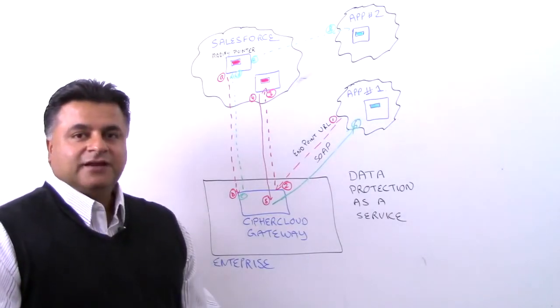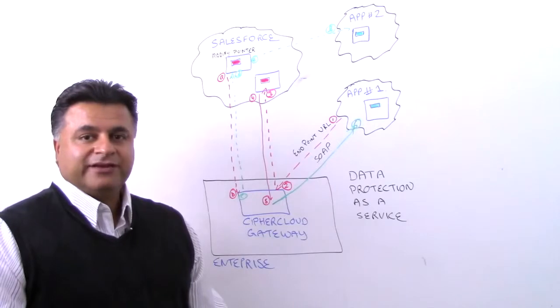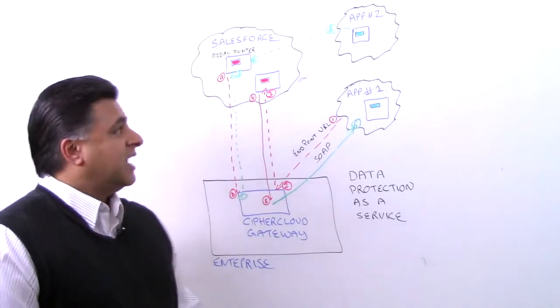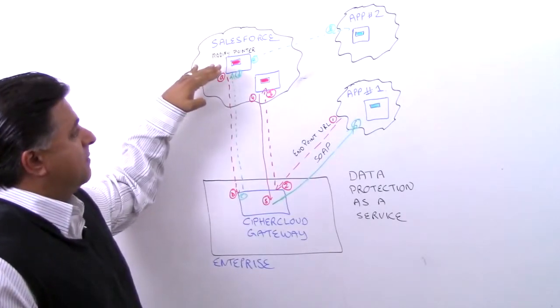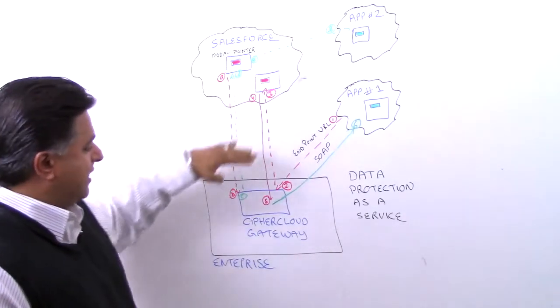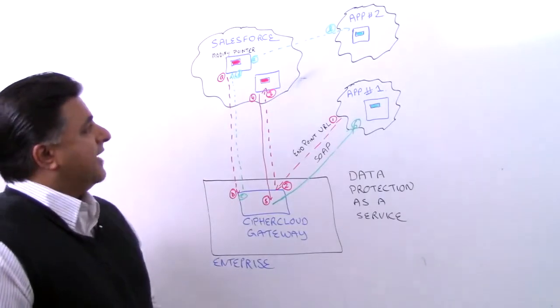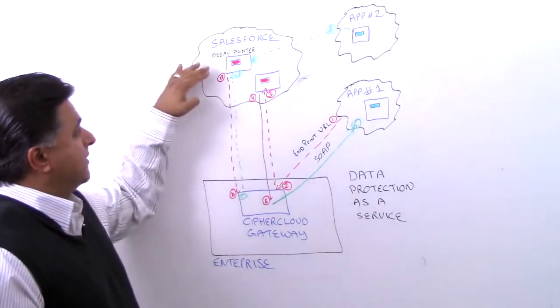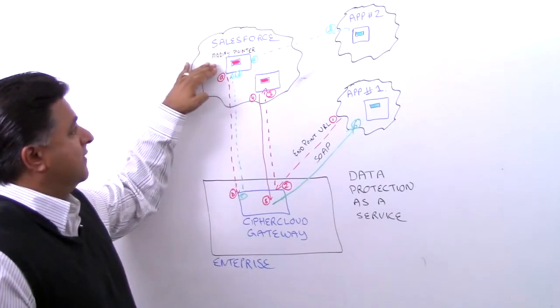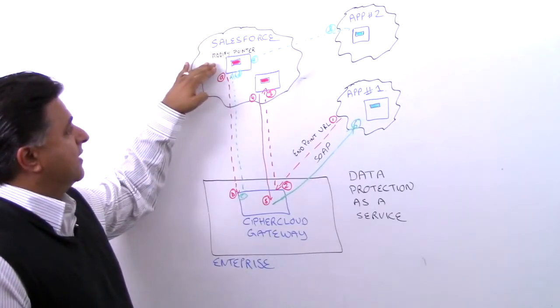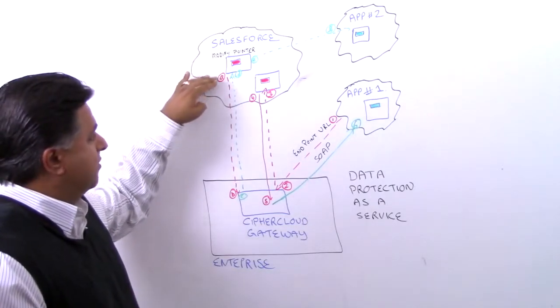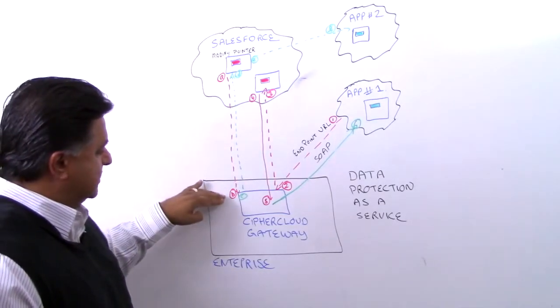There are cases where a third-party application that's part of the AppExchange of Salesforce may rely on that content and may not have the opportunity to actually connect directly to our gateway. In that case, we can actually work with Salesforce and modify the pointer within Salesforce itself. So whenever this kind of application requires this information, we actually point to our gateway first, as I've depicted in steps A and B.